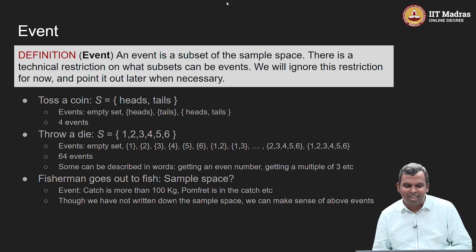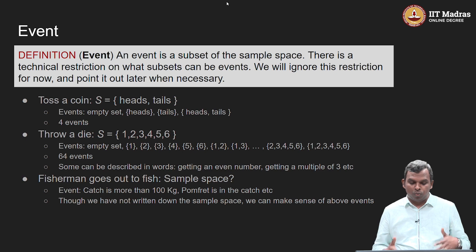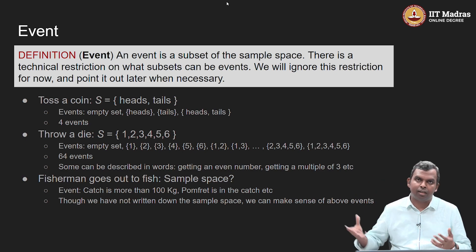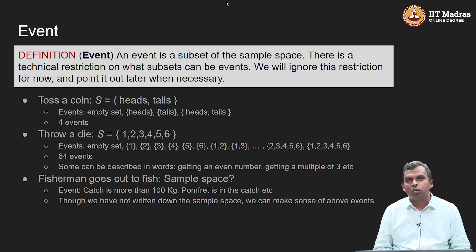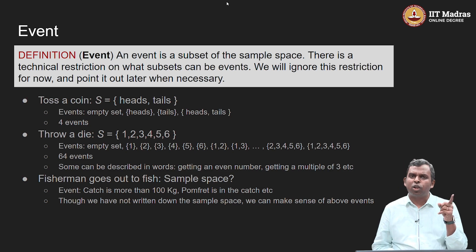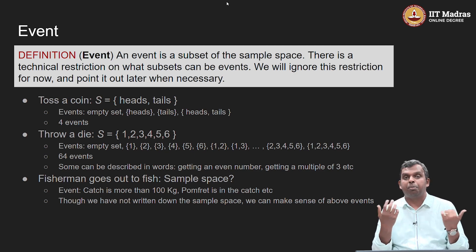Let us move on to a slightly more complicated example: throwing a die. The sample space has six outcomes — 1, 2, 3, 4, 5, 6 — and you can now start writing out events. If you have a set with six elements, how many subsets do you have? It turns out the answer is 2 to the power 6. This is true for any finite set: the number of subsets is 2 to the power of the number of elements. A quick way to understand this: imagine you are constructing a subset, going one element at a time with two choices for each — put it in or leave it out. So 2 × 2 × 2 × 2 × 2 × 2 = 2^6 gives you the number of possible subsets.